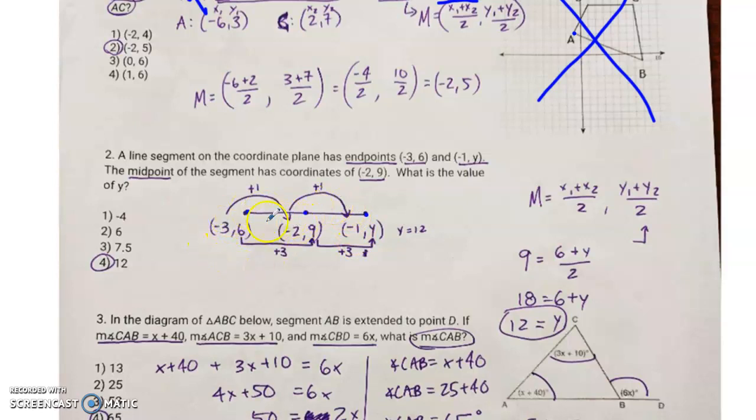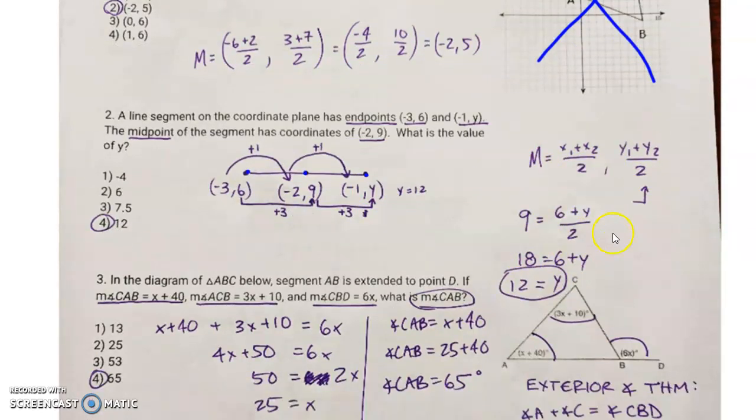For example, from this endpoint to the midpoint, my x value jumped up by one, which means from this midpoint value to the x value of the other endpoint, it must also jump up by one. So from negative 3 to negative 2, from negative 2 to negative 1, look, it works. Then from 6 to 9, I went up by 3. So that means I'm going up by 3 again from 9 to whatever this is, y happens to be equal to 12. You can also solve this using the midpoint formula if you want, I prefer not to.